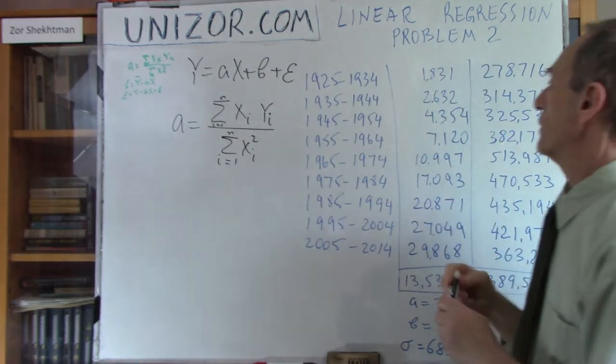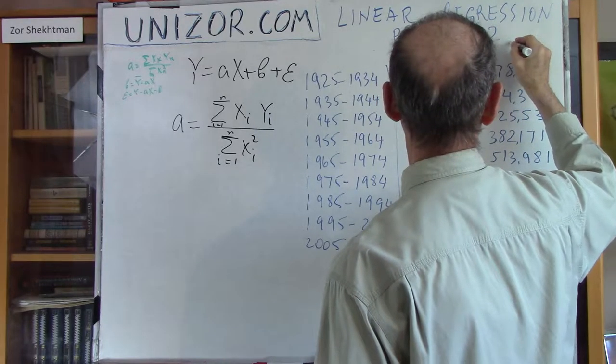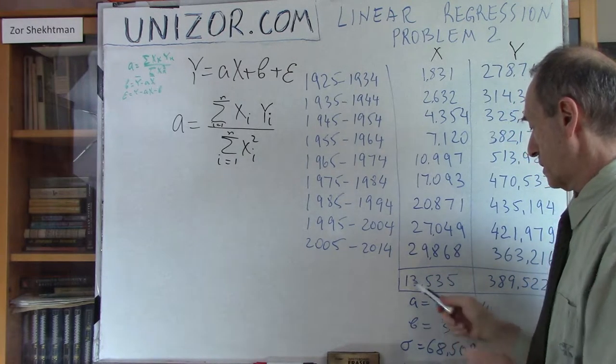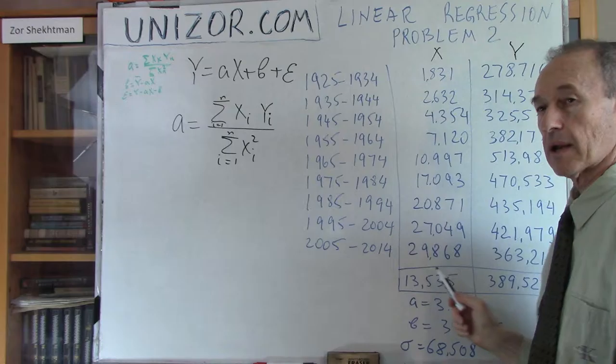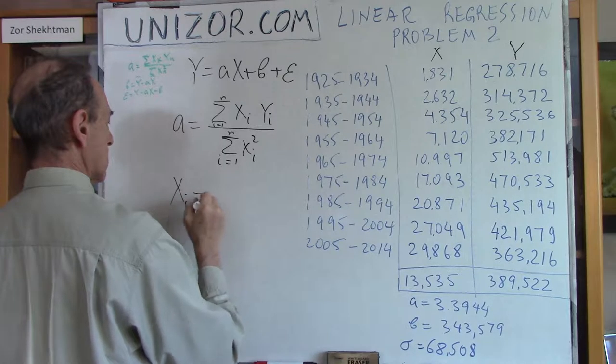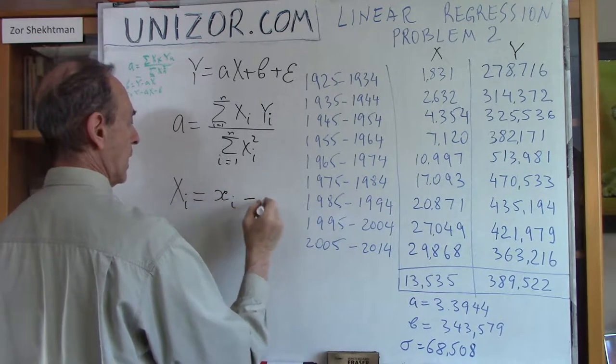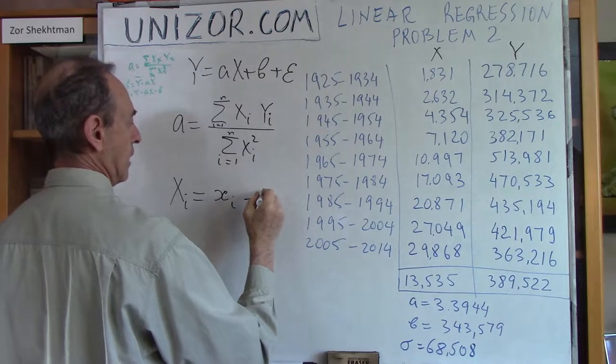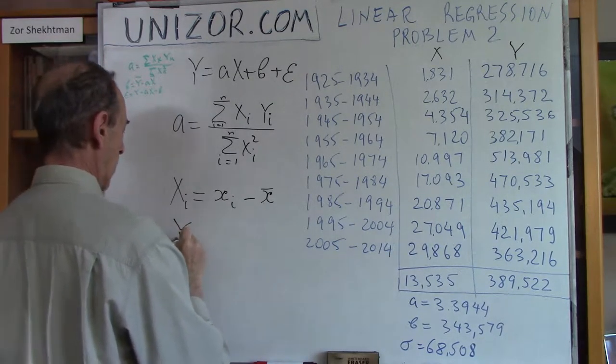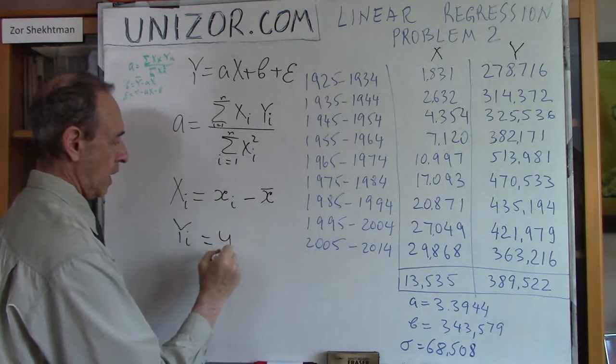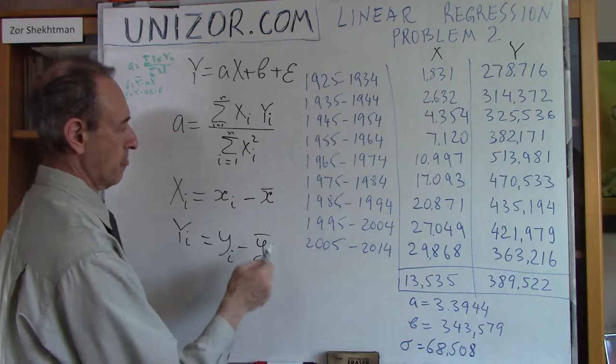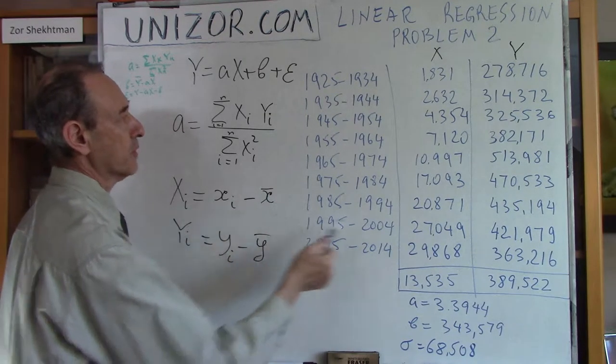I assumed, when I was deriving all these formulas in the previous lectures, that epsilon is a normally distributed random variable, and that's very important, with the mathematical expectation of zero. That's why we have this B as a constant. And some standard deviation, which we have to establish after A and B are established. And since we know the real data, observed data for X and Y, after we know A and B, we can establish the data for epsilon and find sample deviation. So that's the plan.